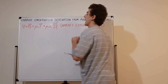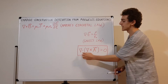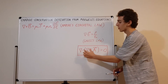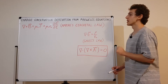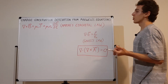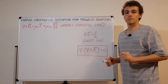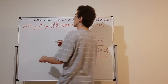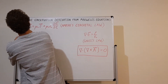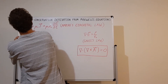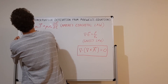We'll use the vector identity that says the divergence of the curl of any vector field is always zero. To use this, we take the divergence of both sides of Ampere's law. On the left-hand side, that gives us the divergence of the curl of the magnetic field.